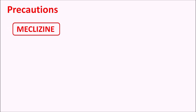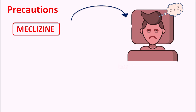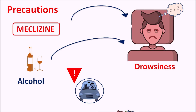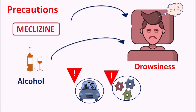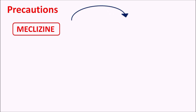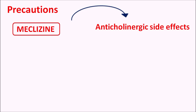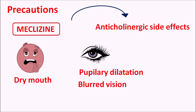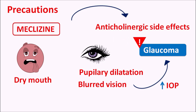One important precaution is that Meclizine acts centrally and can produce drowsiness. It should be carefully given alongside other drugs and alcohol, as alcohol can further increase drowsiness. Caution is needed for patients who are driving vehicles or working with machinery. Meclizine can also produce anticholinergic side effects, including dry mouth due to blockade of muscarinic acetylcholine receptors at the salivary glands. It can affect the eye, producing pupillary dilation and blurred vision, both of which can increase intraocular pressure. Therefore, this drug should be carefully given in patients at risk of glaucoma.